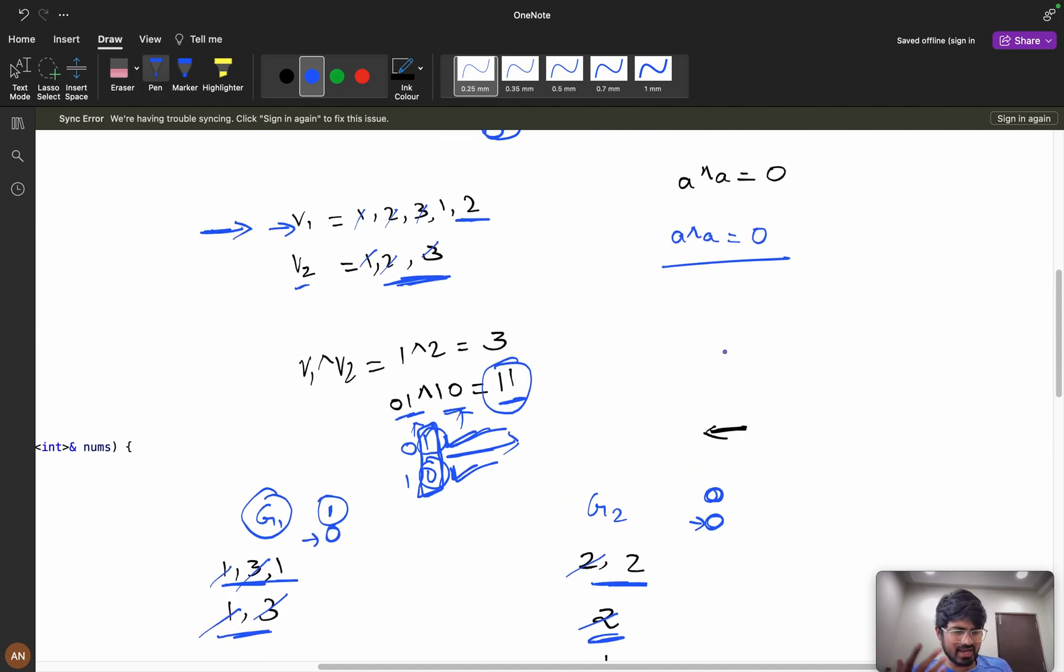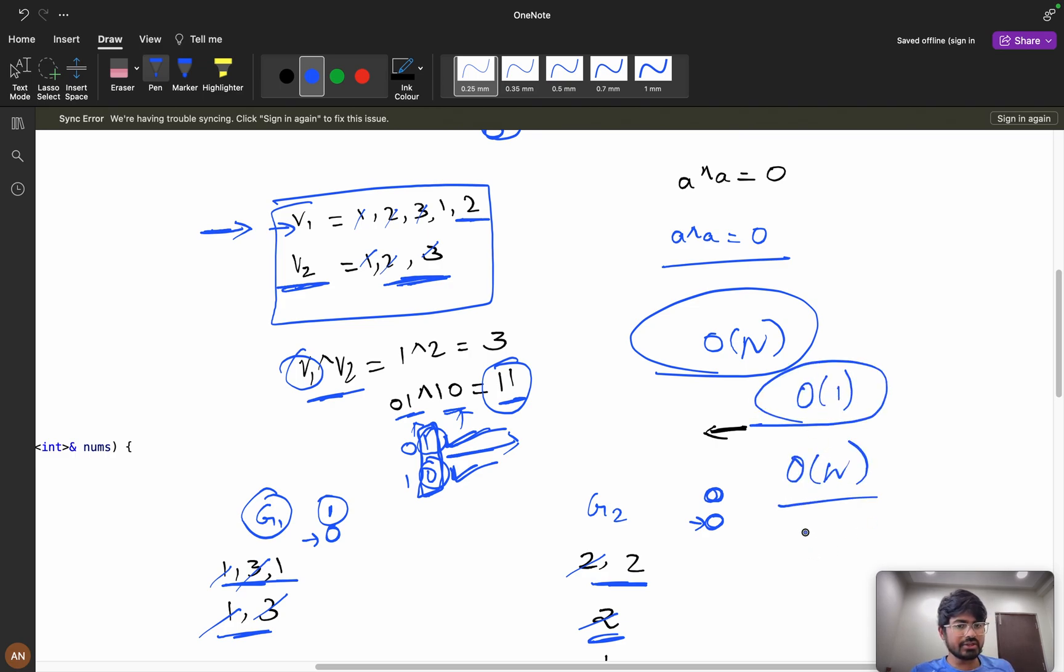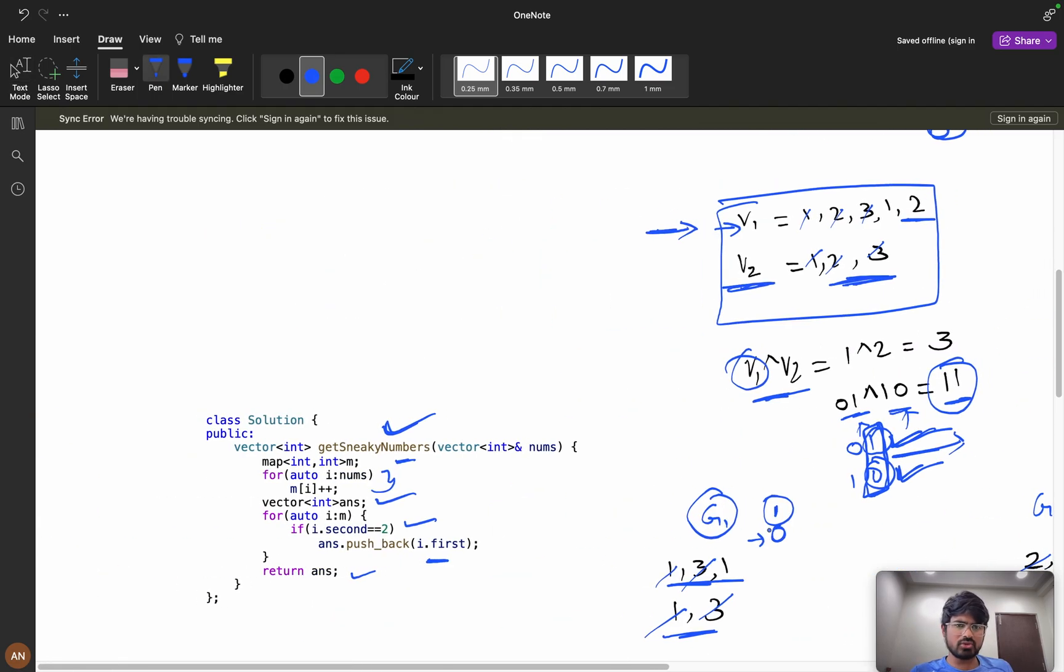Now if you see, what can be the time complexity? Maximum I will iterate order of n. Did you use any extra space? You have used only v1 and v2, which were given in the question. So my space will be order of 1. You can say overall space is order of n, but the used space is order of 1.